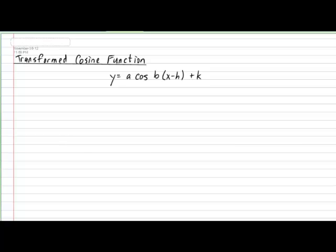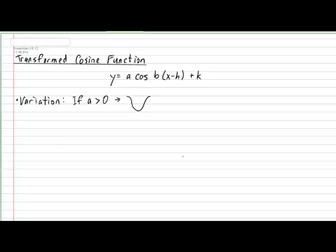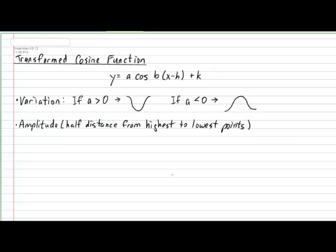The first element to think about when graphing a cosine function is its variation. In a cosine function the variation is dependent only on the variable A. If A is positive, that means your cycle will be in a dip. However, if the value of A is negative, that will produce a cycle that will be in a hump. The next element to consider is the amplitude, which is defined as the half distance from the highest to the lowest points on the graph, and can be calculated by taking the absolute value of A.